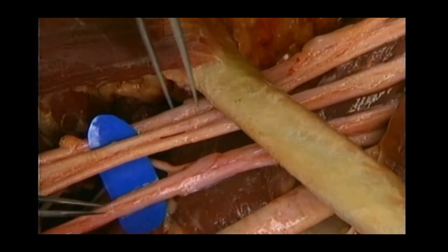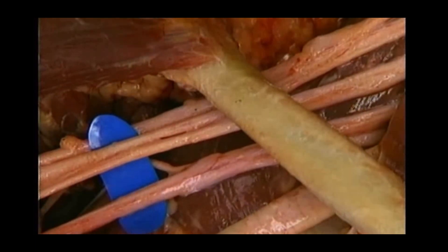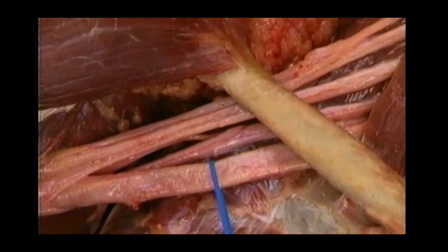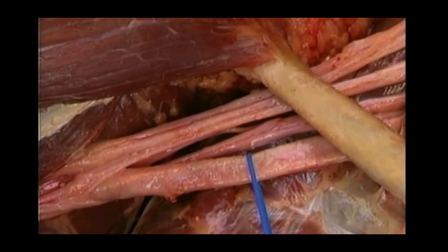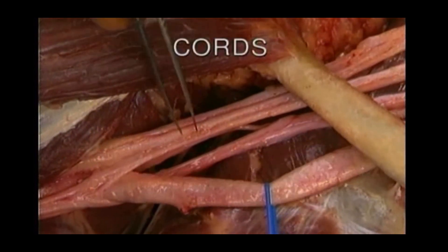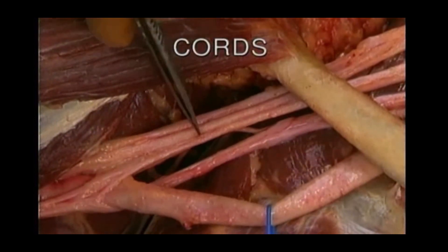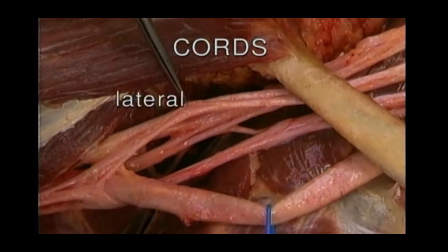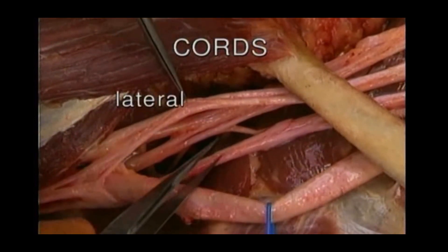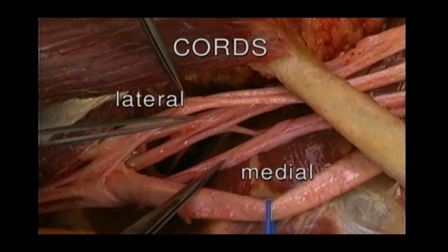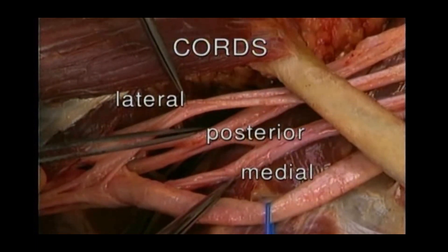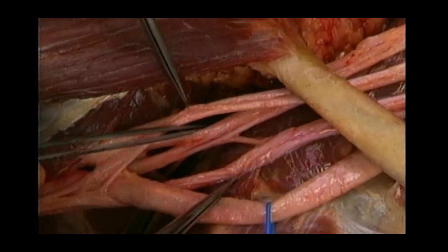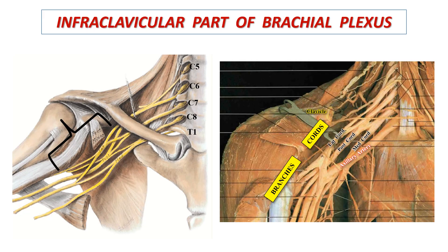Such divisions unite to form cords which give rise to branches. Cords and branches belong to the infraclavicular part, which lies within the axilla surrounding the axillary artery. Here is the lateral cord, here is the medial cord, and here is the posterior cord of the brachial plexus, giving rise to their branches.